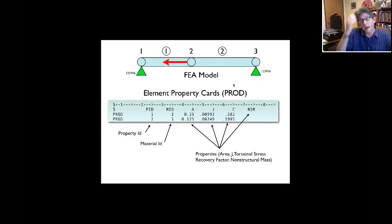Now for each element, you have to have a property to define it. So the property card for a rod element is a PROD card. Now for a rod element, what you have to define is what material it's made out of, the shear stiffness, the torsional stiffness J, the diameter to recover the torsional stresses, and then possibly some non-structural mass if there is any.